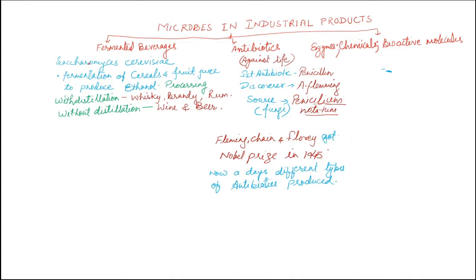For fermented beverages, the yeast Saccharomyces cerevisiae is utilized. This yeast performs fermentation of cereals and fruit juices to produce ethanol. Depending on the processing method — with distillation, whiskey, brandy, and rum are produced; without distillation, wine and beer are produced.